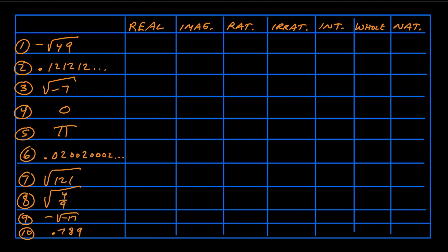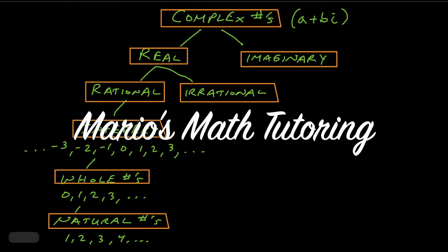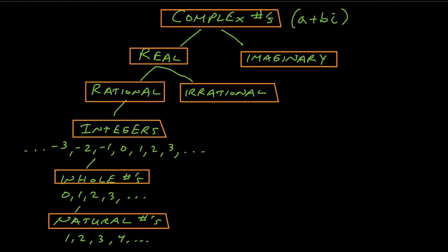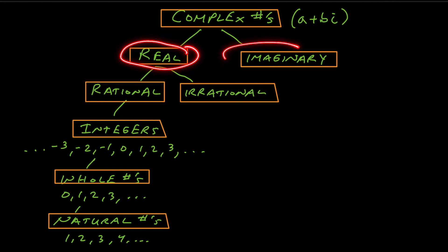Before we do that, let's take a look at a little decision tree here to see how to determine what categories a number falls into. The most general category is at the top where we talk about complex numbers. If you've gotten to learning about complex numbers, this will be easy for you. A complex number is part real and part imaginary, so you can see you've got real numbers and imaginary numbers.